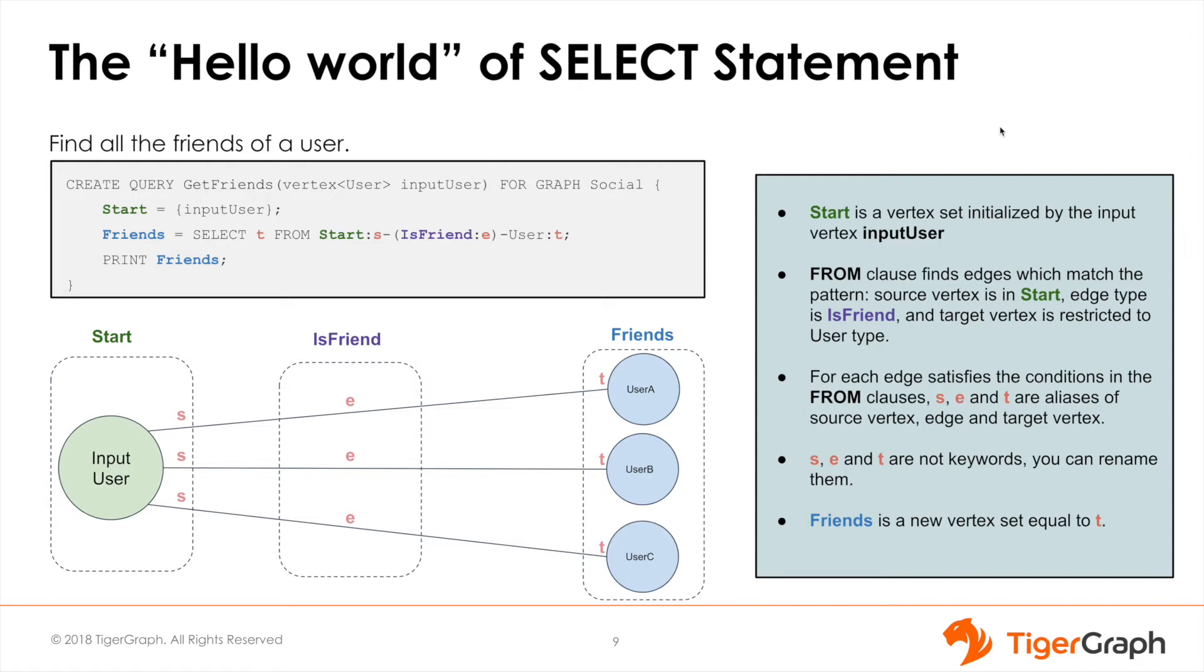Here we can see the query we will write to do this. The query's name is get_friends and it will accept a vertex of type user for our specific graph.